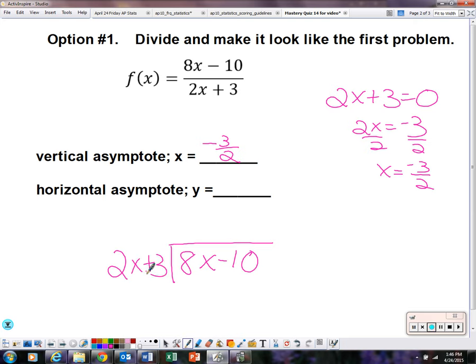Remember how this works. So 2x, 8x. How do I get 2x to become 8x? What would I multiply 2x by? 4. So write the 4 above the minus 10. Now multiply. So 4 times 2x is 8x. 4 times 3 is plus 12.